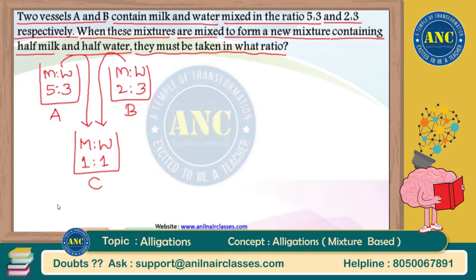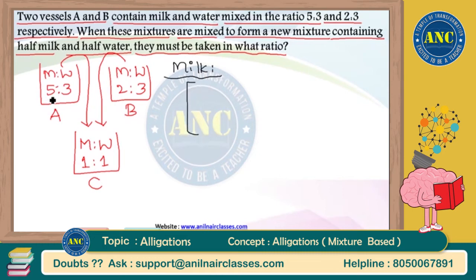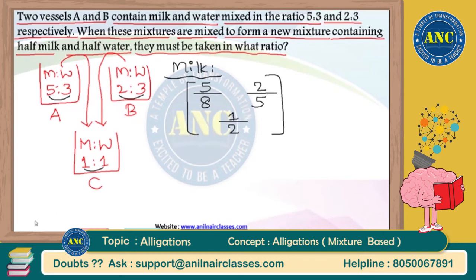Taking milk as the base reference: in vessel A, out of 5+3=8 liters, 5 liters belong to milk, so 5/8. In vessel B, out of 2+3=5 liters, 2 liters belong to milk, so 2/5. In vessel C, out of 1+1=2 liters, 1 liter belongs to milk, so 1/2. To convert to whole numbers, take LCM of 8, 5, and 2, which is 40.